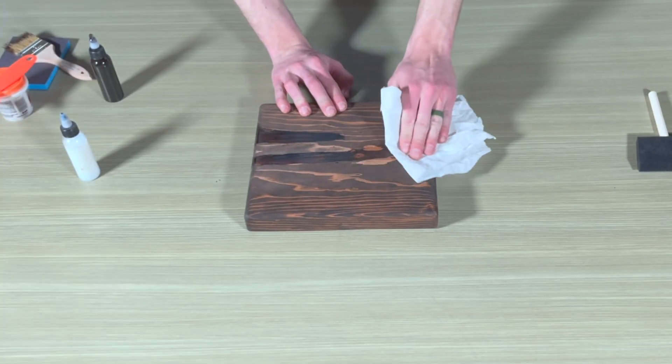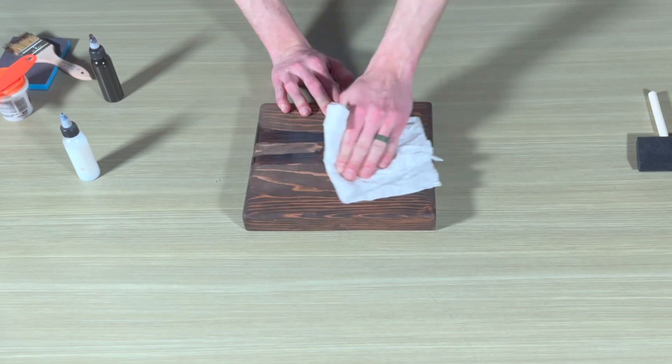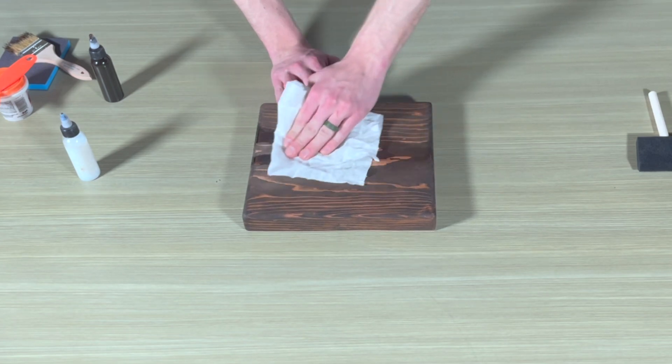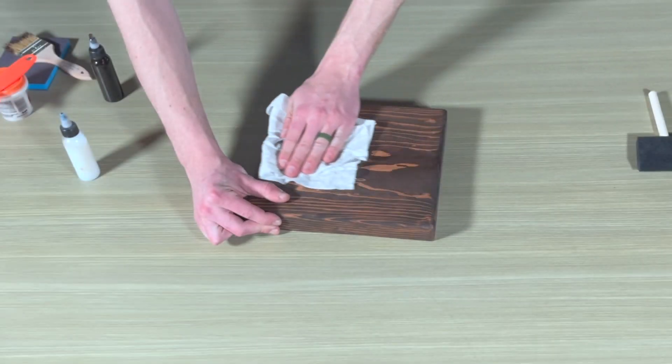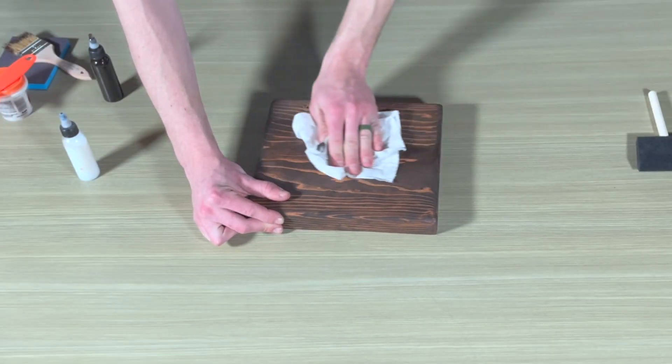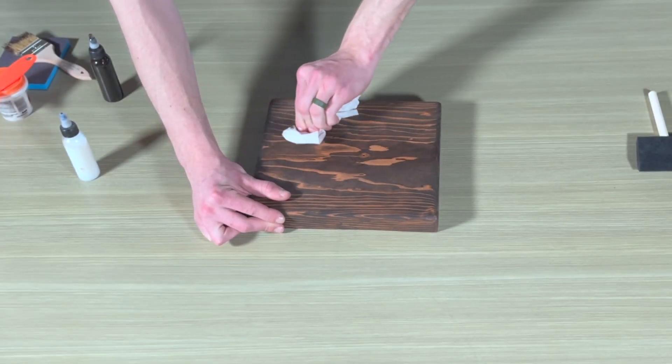Once stained, wipe the surface with a rag or paper towel to remove any excess stain left on your table. It is recommended that you wait four hours before sealing your table after staining.